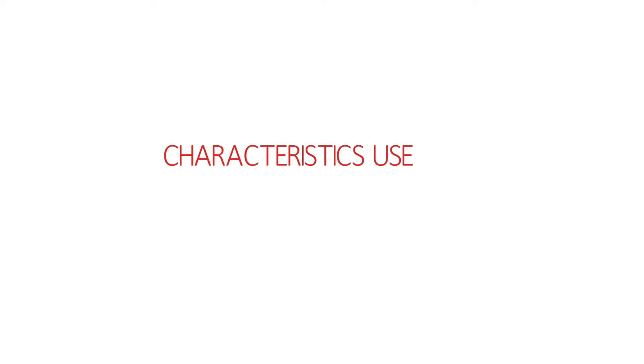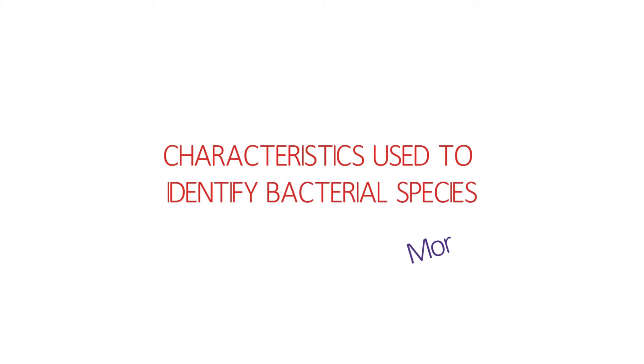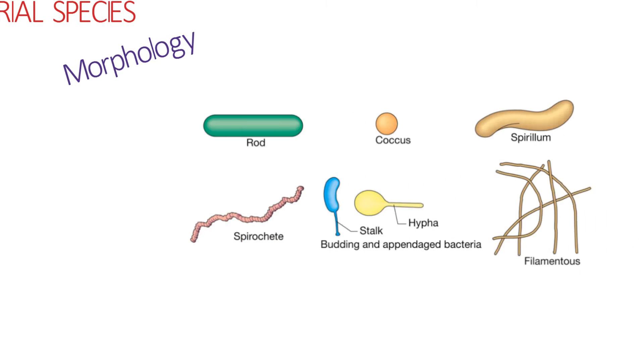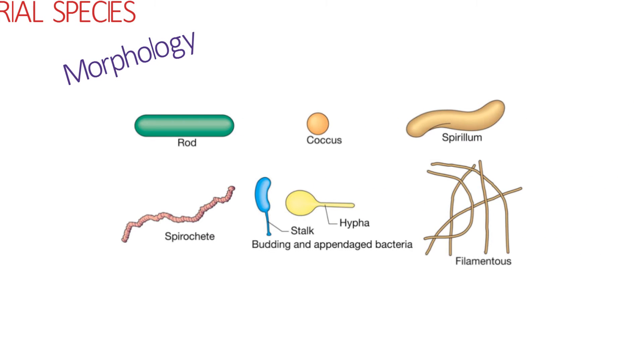There are quite a few different characteristics we can use, including morphology. Most bacteria are either rod-shaped or coccal-shaped; however, there are other morphologies which can be viewed under a microscope, which can also help to identify the species.